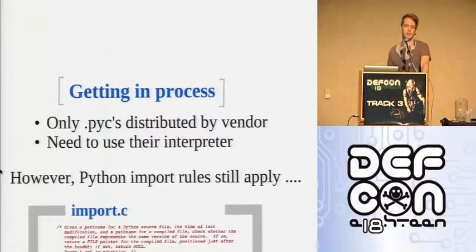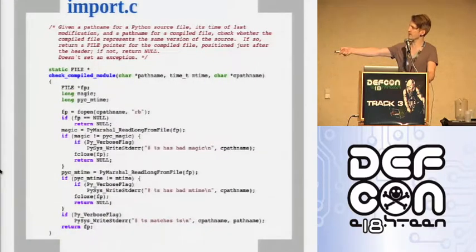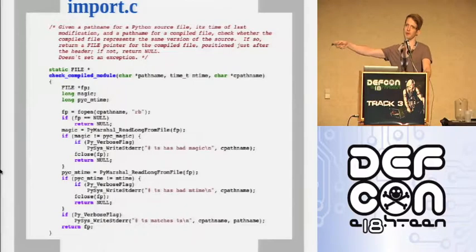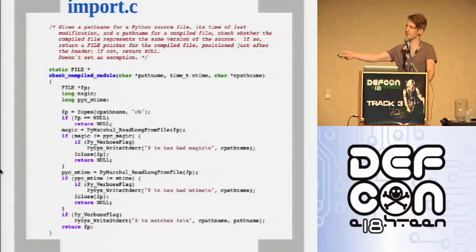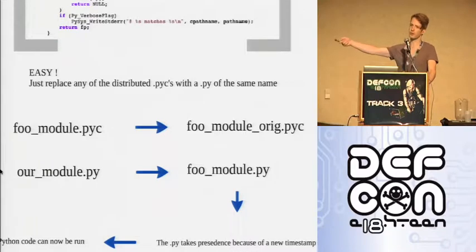How do we get in-process? If people are obfuscating their code they won't distribute the .py files, only the .pyc files. If they've modified their runtime you need to use their interpreter to run their .pyc files. But the import rules for Python still apply. In import.c there's an equality test on the timestamp — if the timestamp in the Python bytecode doesn't match the timestamp on the .py file on disk, it recompiles. This means you can just rename their module, take your own code calling it foo_module.py, and your code runs in preference.